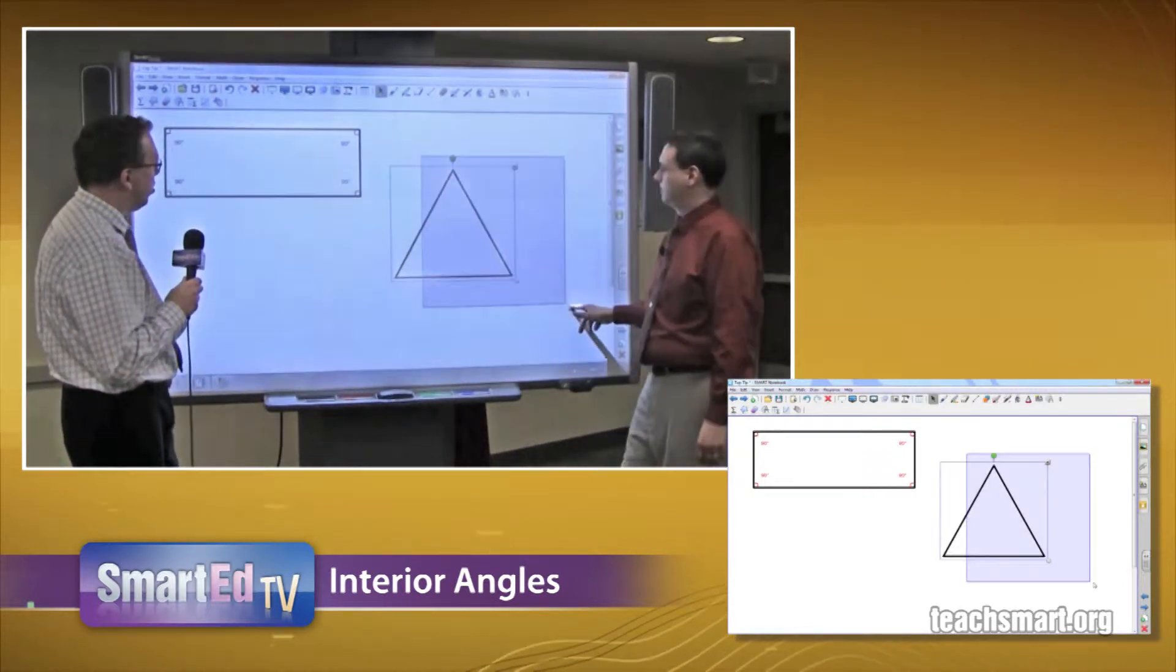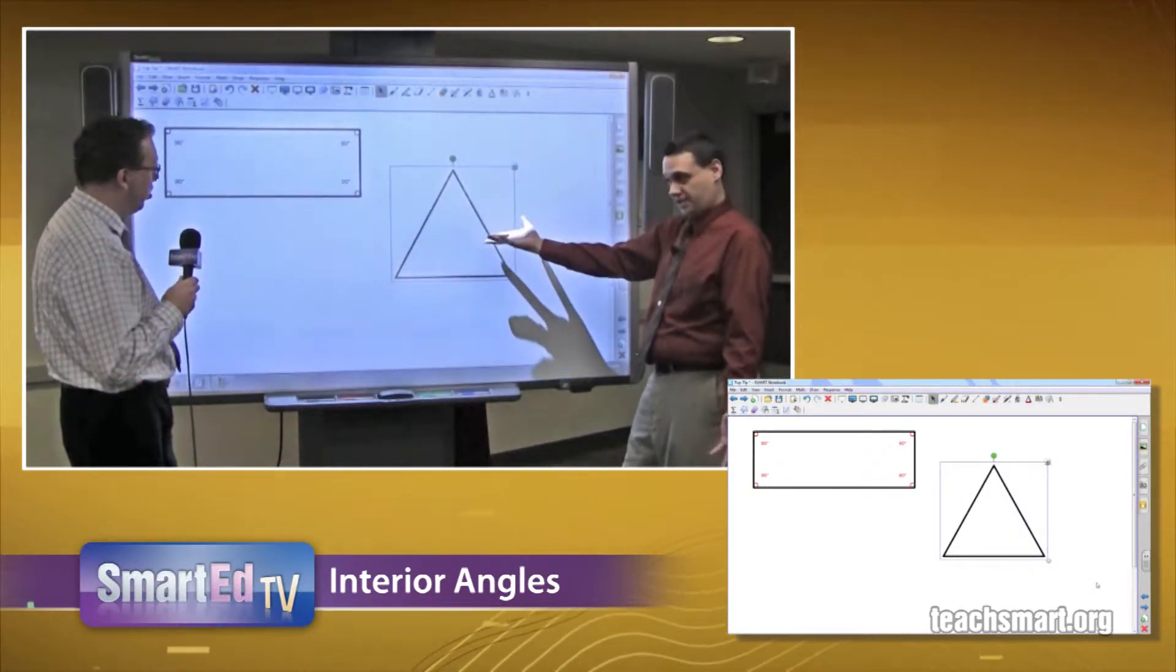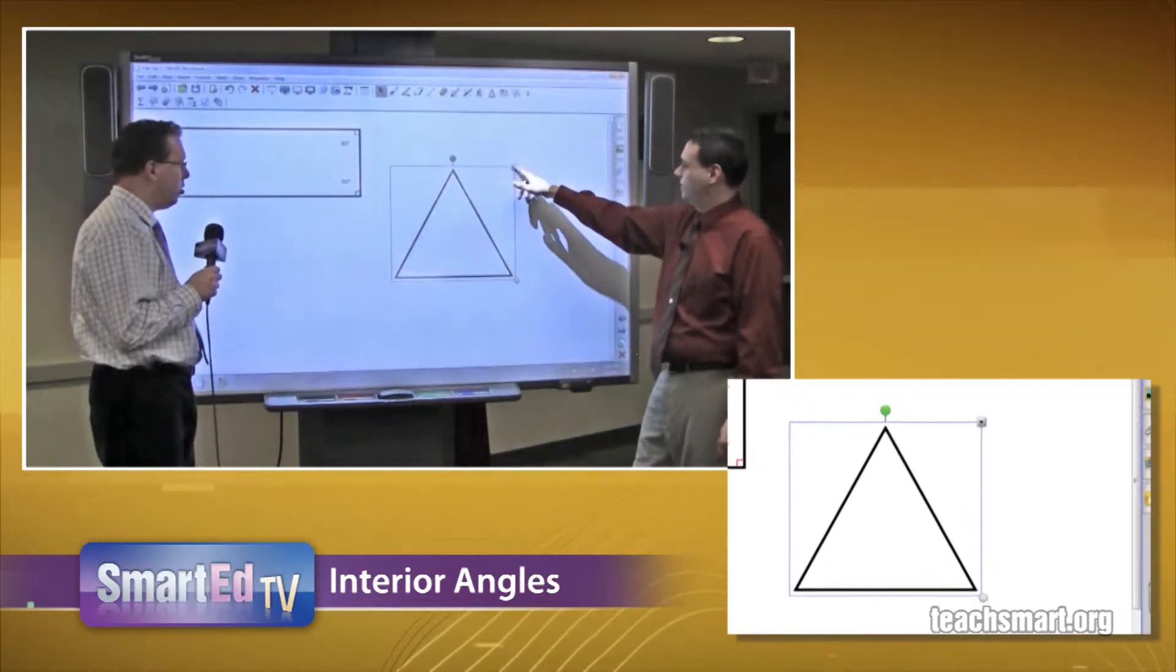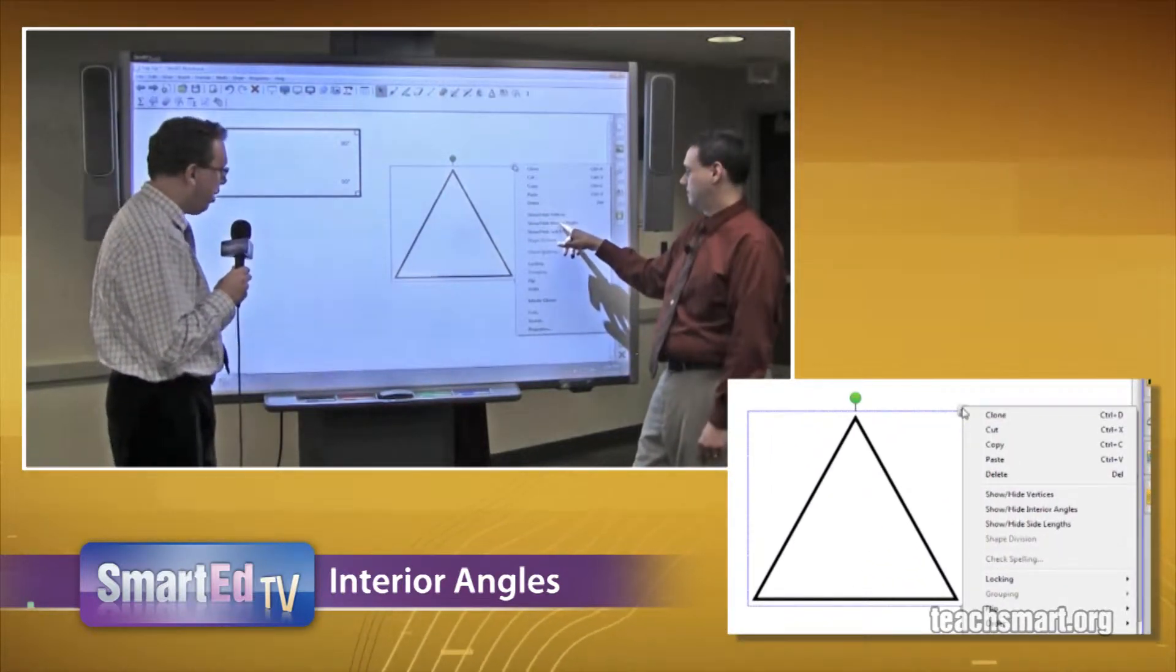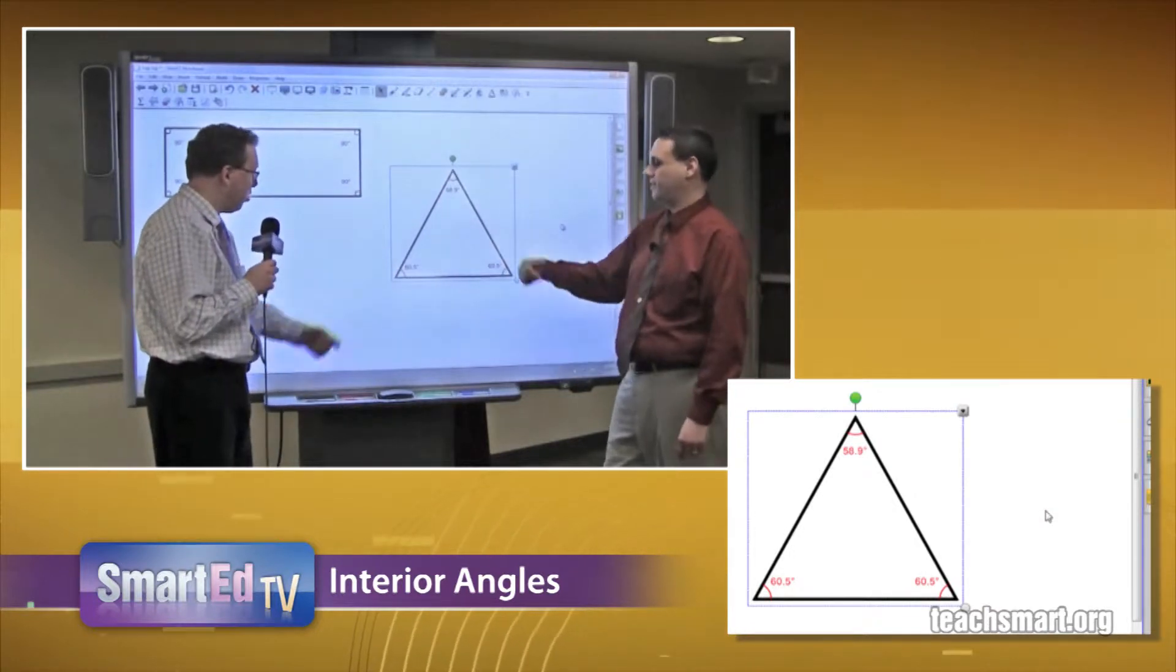choose my select tool and again I'm selecting my shape. Right. I want to go to my drop-down options menu and show interior angles. And there's my interior angles.